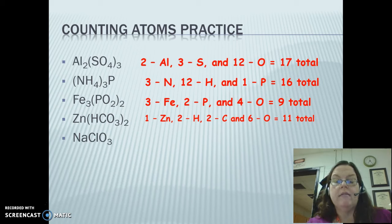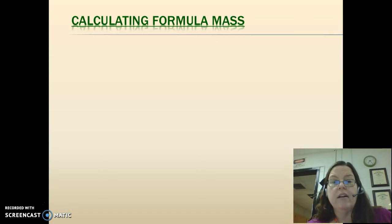Sodium chlorate. We have one sodium, one chlorine, and three oxygens. Remember, there's no group numbers, so no parentheses means nothing to multiply by. We just simply count what we see, so we have a total of five atoms.